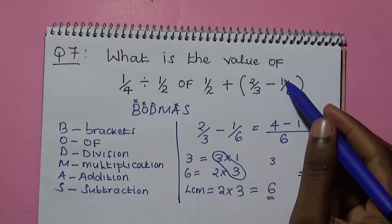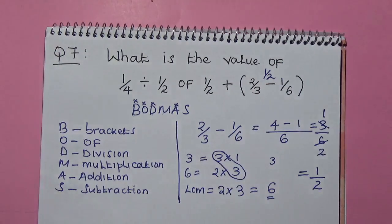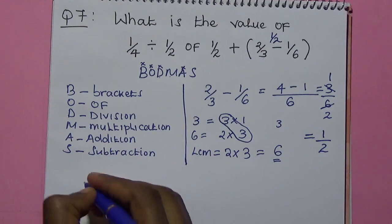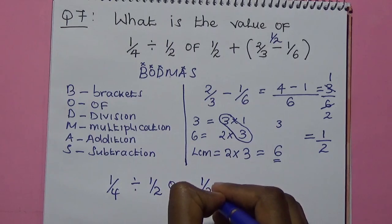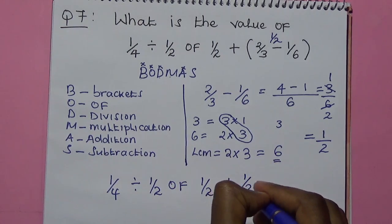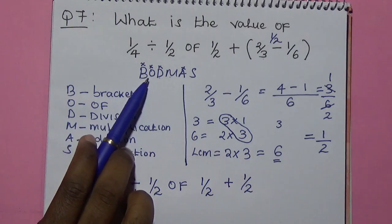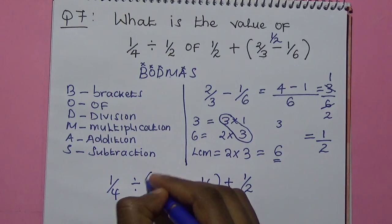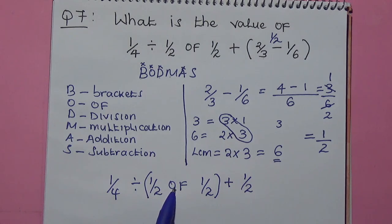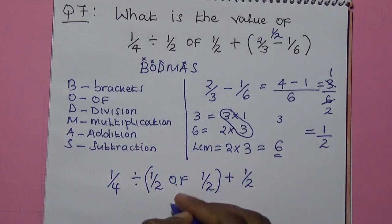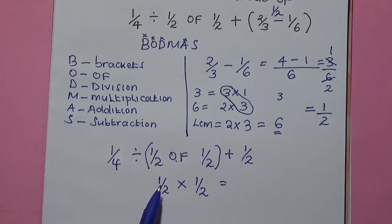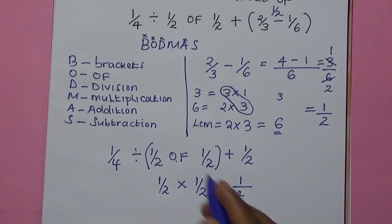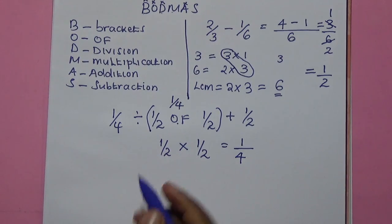Therefore, 2 over 3 minus 1 over 6 equals 1 over 2. We write down what we have. We are done with brackets. The next step is of. We know that of means multiplication. Therefore, a half of a half means a half multiplied by a half. This will be 1 times 1 is 1, over 2 times 2 is 4. Therefore, it is 1 over 4.